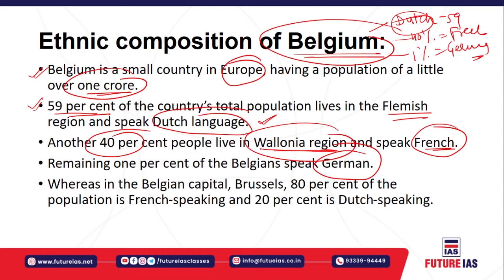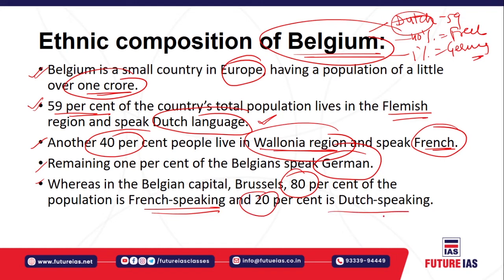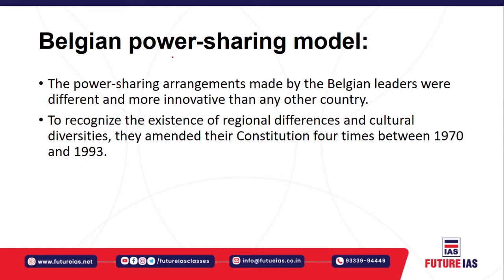In Belgium's capital, Brussels, the demography is different: 80 percent of the population is French-speaking, unlike the national average of 40 percent, and 20 percent are Dutch-speaking, with insignificant German-speaking minorities. So in the capital, the majority — 80 percent — speaks French.